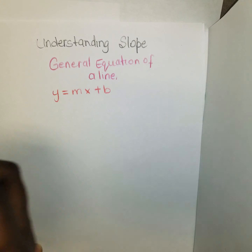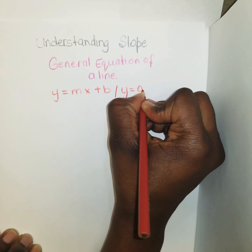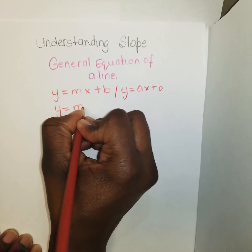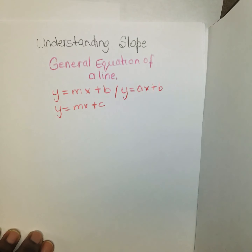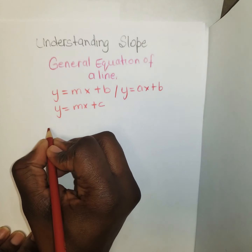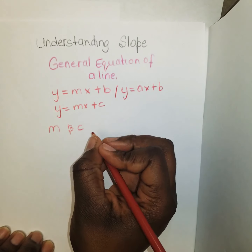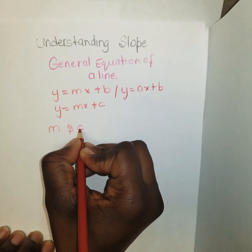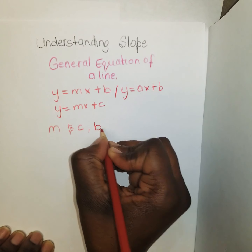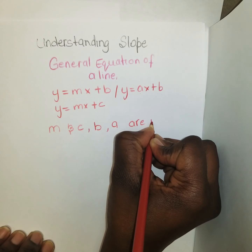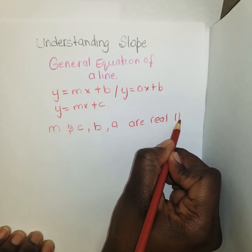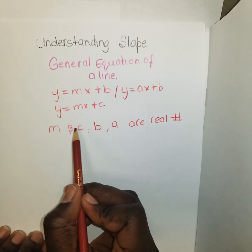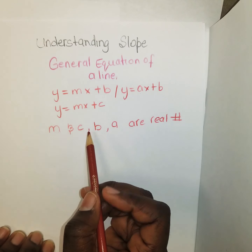Some persons will have y = ax + b, some will have y = mx + c — but truth is, m, c, b, and a are all called real numbers. And once they're called real numbers, any variable can be used to replace these letters.